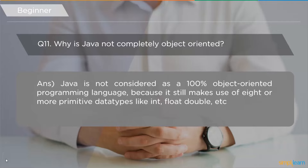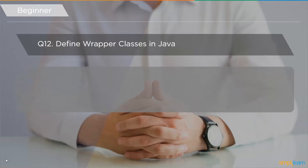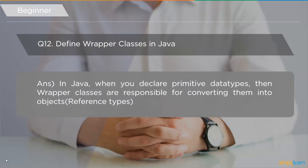The next question is: define wrapper classes in Java. When you declare primitive data types such as int, float, double, etc., wrapper classes are responsible for converting them into objects or reference types. Since Java is not 100% object-oriented due to primitive types, wrapper classes convert them into objects for ease of compilation and execution.